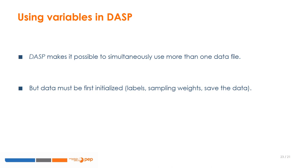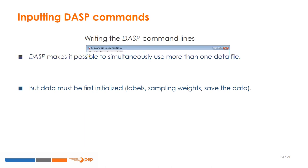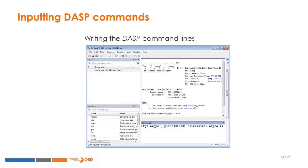As shown in the command menu, DASP commands can also be entered directly into the command window. Alternatively, as for all Stata commands, the dialog box can be accessed through the Stata menu, DASP submenu, or by typing 'db' plus the name of the command in the commands window — for example, 'db ifgt'.